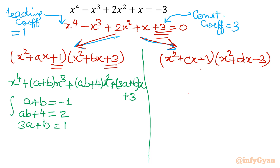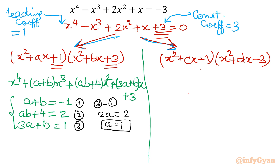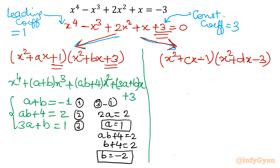This is a system of three equations. Let me label them 1, 2, and 3. Doing equation 3 minus equation 1 gives 2a = 2, so a = 1. Substituting a = 1 into equation 2: b + 4 = 2, so b = −2. From this first system of equations, a = 1 and b = −2.